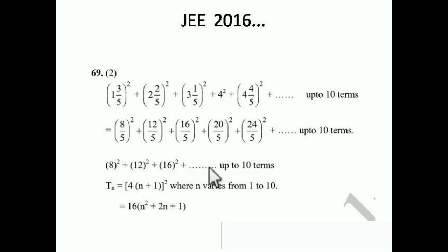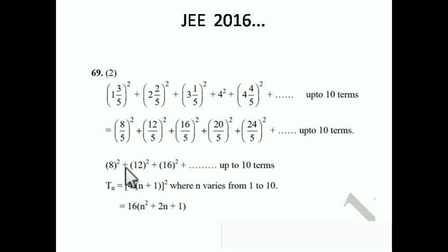For this type of question we need to find the formula for the nth term. This is an arithmetic sequence: 8, 12, 16, ... We apply the formula tₙ = a + (n−1)d, where a = 8 and d = 12 − 8 = 4. Evaluating: tₙ = 4 + 4n = 4(n + 1). Squaring, the nth term is [4(n+1)]² = 16(n² + 2n + 1).